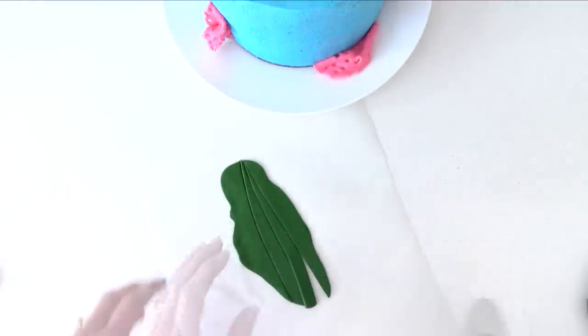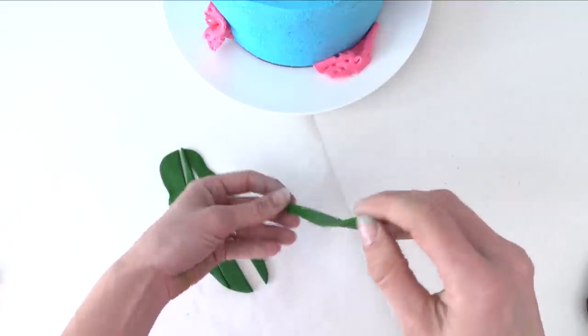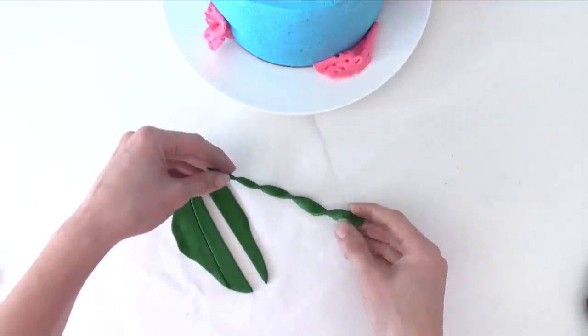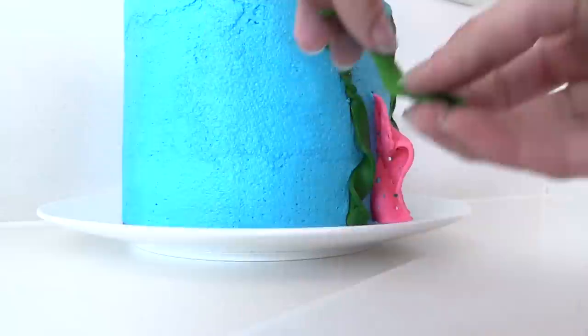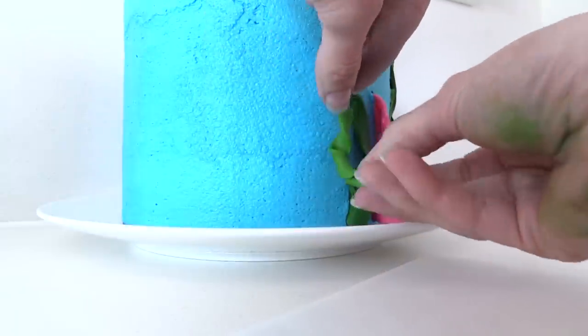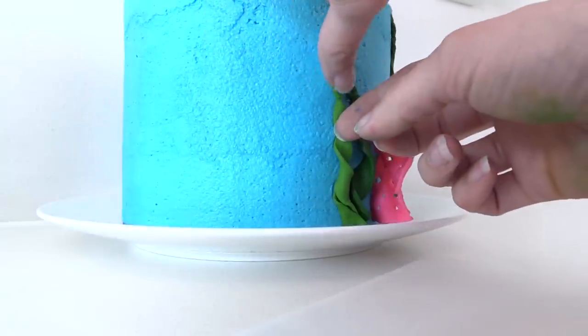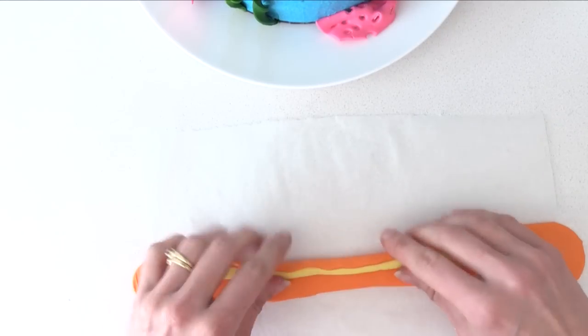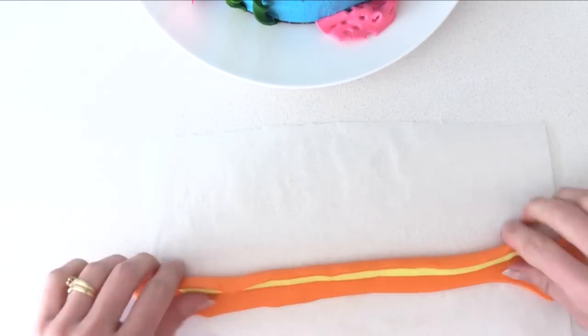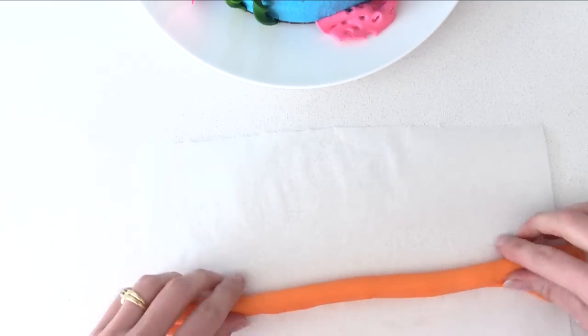For the seaweed, just roll out some green, cut strips, and simply twist them and add them to the side of the cake. This looks best if you use a couple of different shades of green instead of doing them all exactly the same.